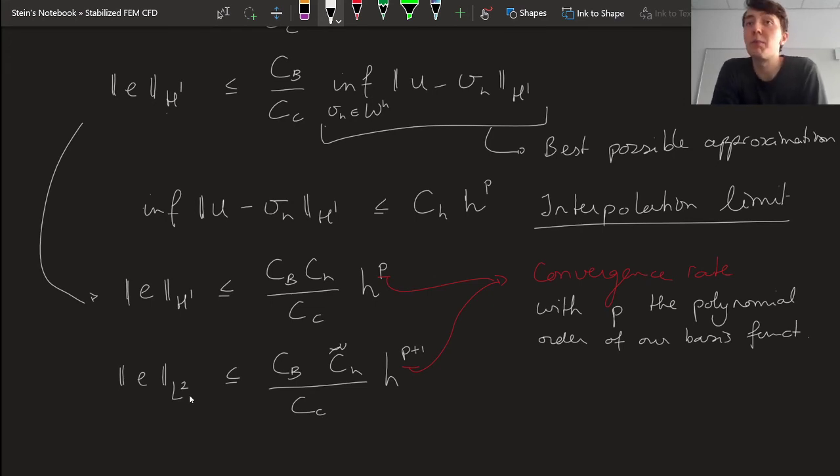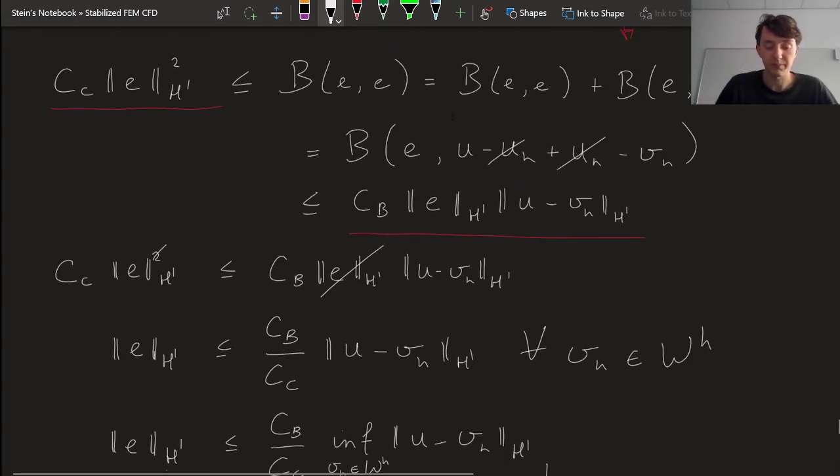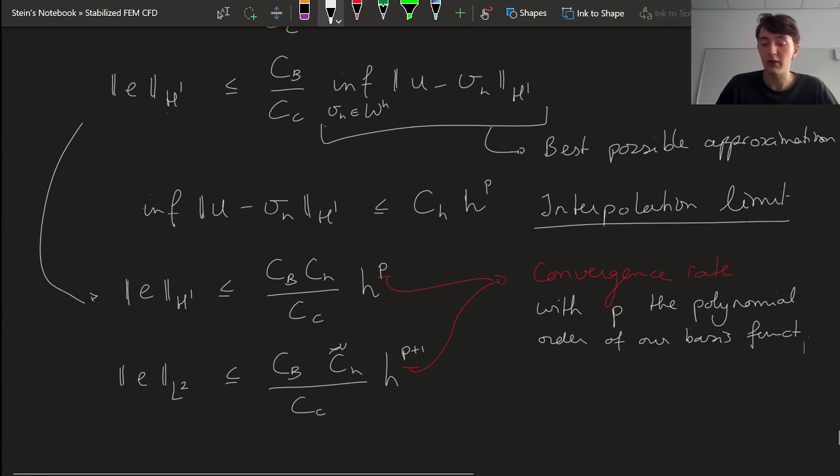Where p is the polynomial order of our basis functions. So if we're using linear basis functions, then p is equal to 1. And then we obtain the expressions that had a second ago. So h to the power 1 and h to the power 2. And that is something I think that any numerical analysis analyst should be familiar with. The standard convergence rates. So there's the convergence rate of p plus 1 in L^2 sense and the convergence rate of p in H^1 sense. And this follows again very quickly, very naturally, pretty much from a one-line statement here. In combination with this interpolation theory, the limit of the interpolation. And that is a hard limit in the sense that for an arbitrary solution u, you will not be able to get an approximation that converges faster than h to the power p in the natural norm. If we're talking about regular refinement. So there's a limit based on just how well a polynomial basis can approximate any function.